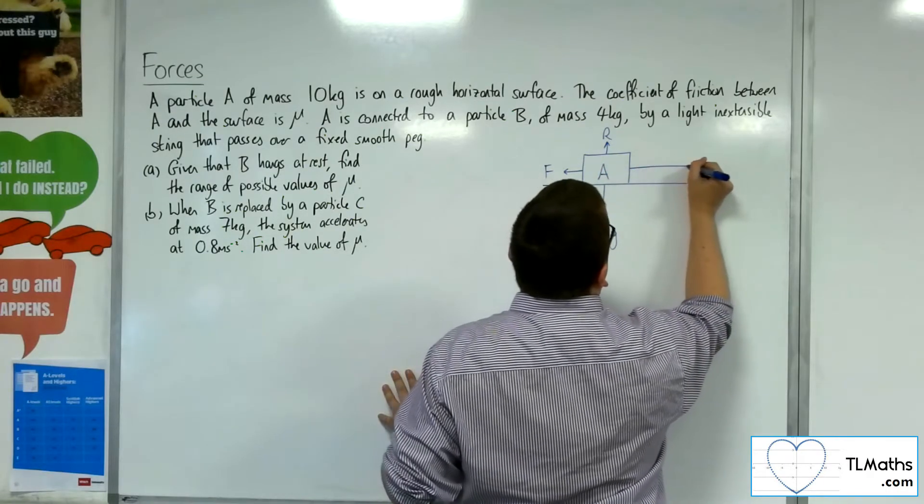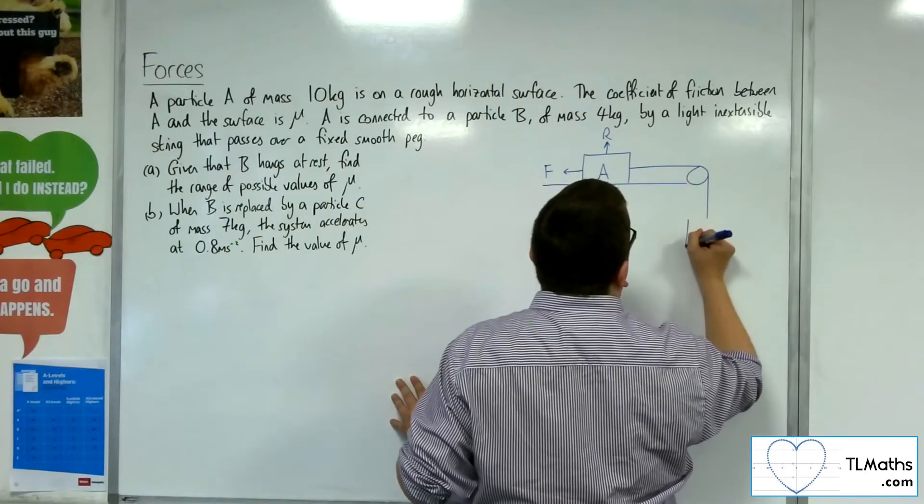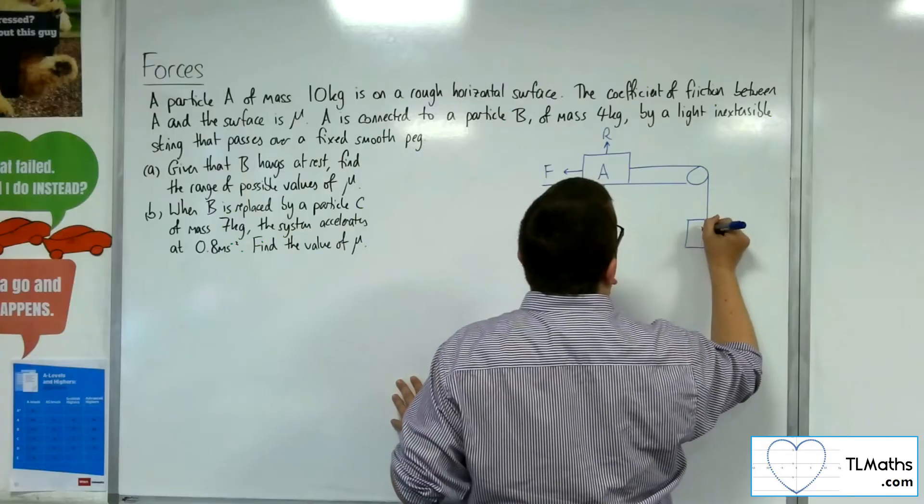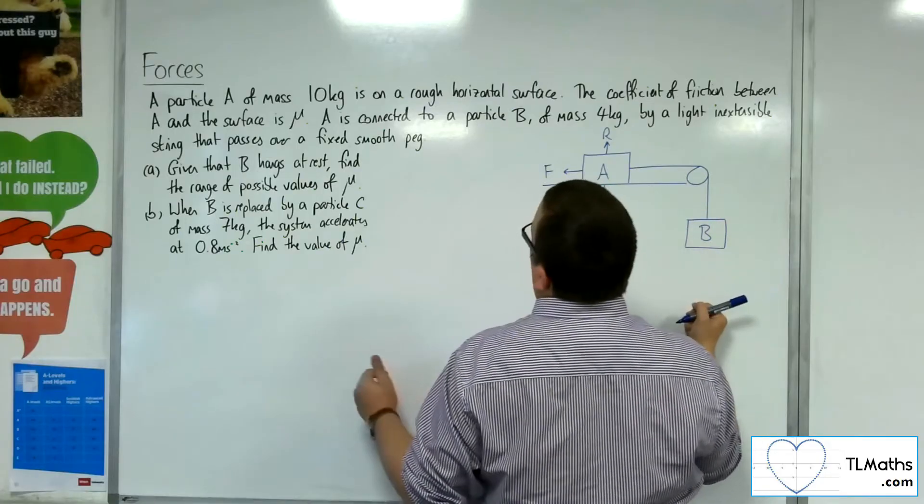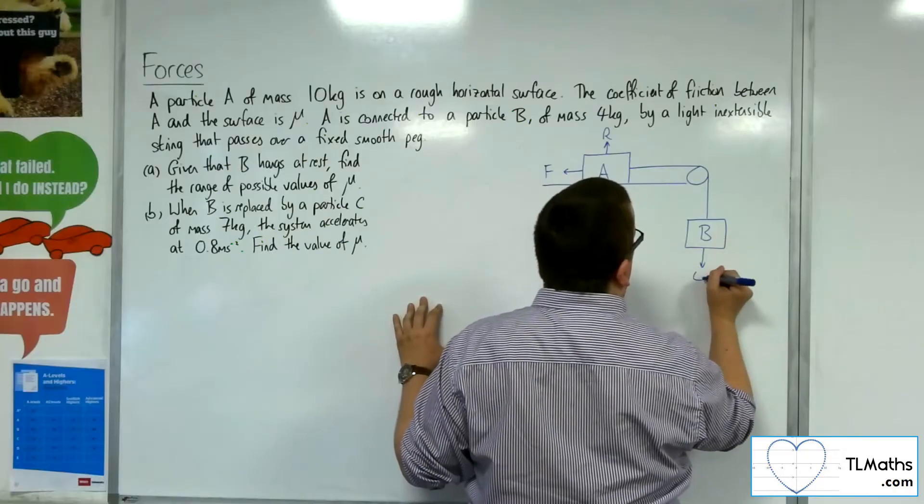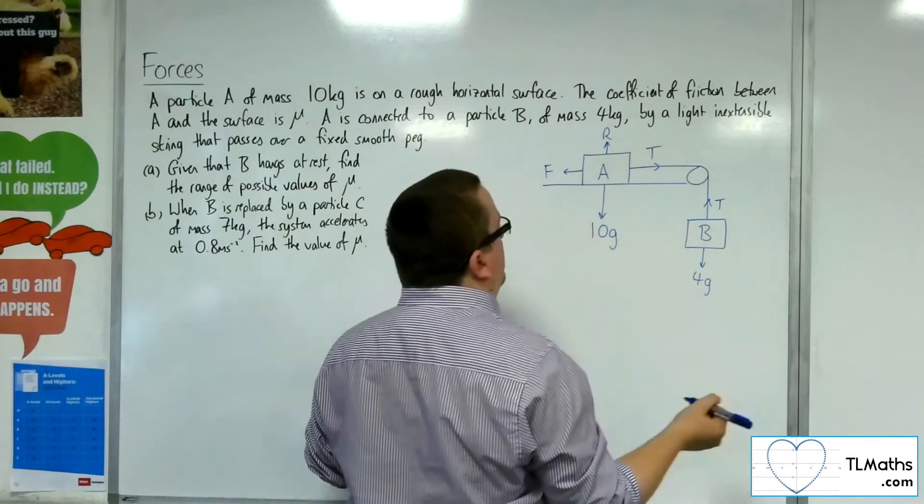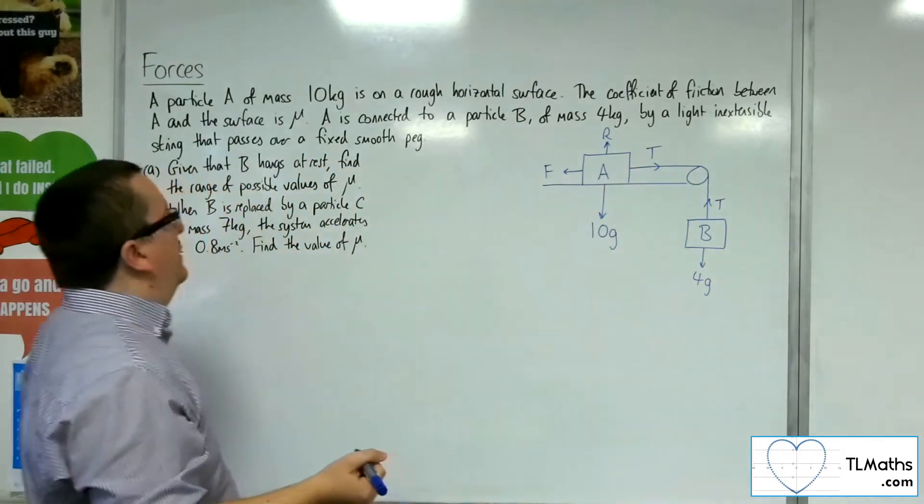So it's attached to another particle that is hanging off the table. Here's particle B, and that has a mass of 4 kilos, so a weight of 4g. There will be tension in the string, and so this is the picture that we're looking at.